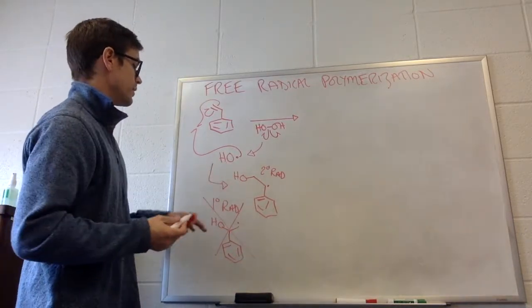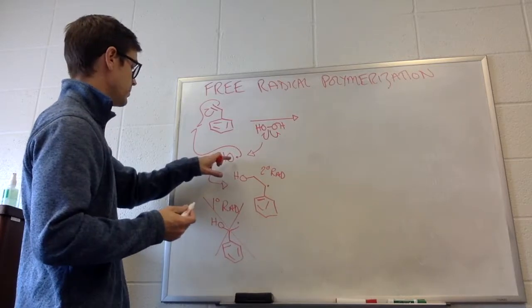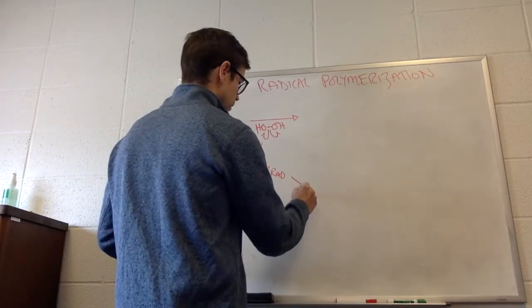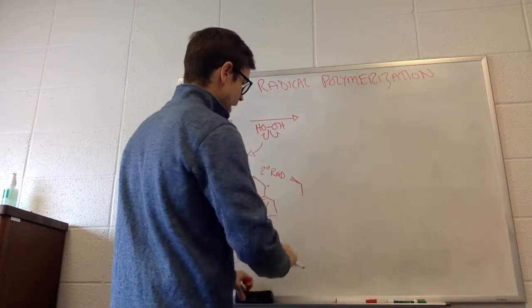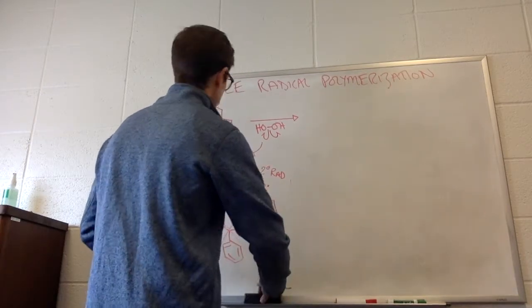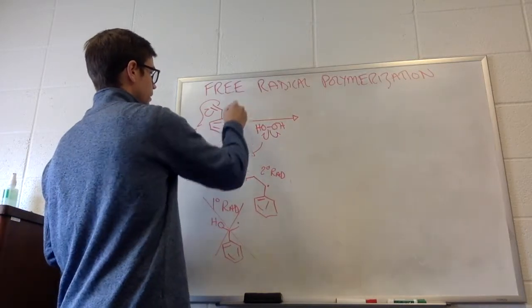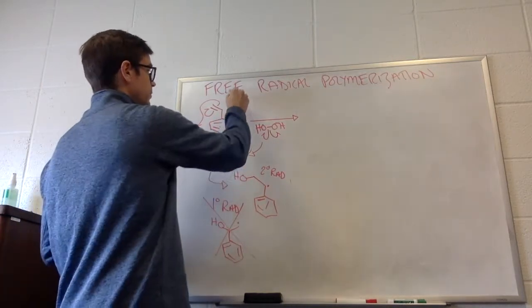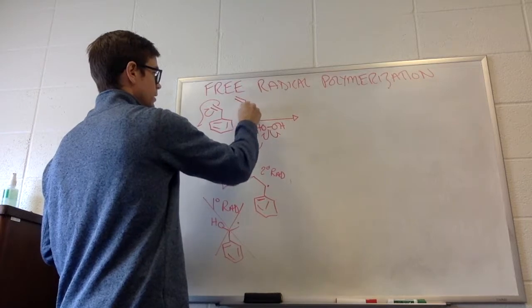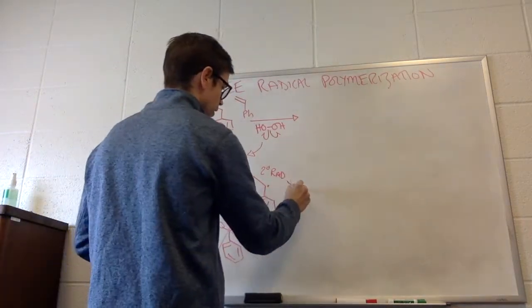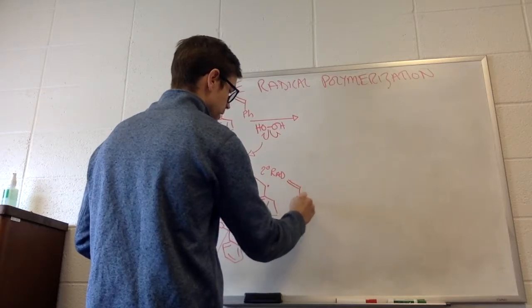So this was the initiation step. Now we propagate it. We can now continue to propagate with more molecules of styrene. On your paper, on your notes, I have that this is abbreviated pH for a phenyl ring. So this is the same thing as if I drew out the phenyl ring.